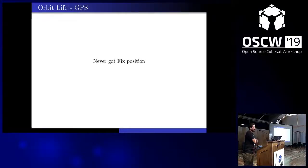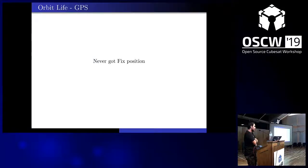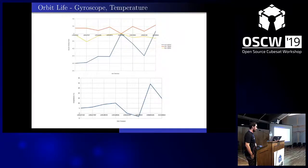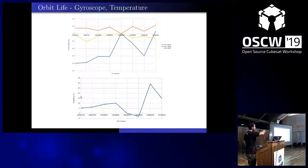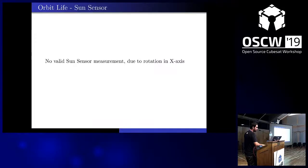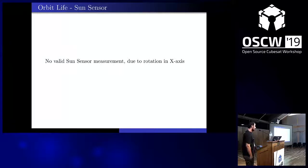The GPS in orbit never got a fixed position, and that is a problem because it never produced a TLE to run the determination algorithm of ADCS. Looking at gyroscopes and temperature: the blue line is the angular velocity of the X axis — in the X axis we have a continuous rotation of about 0.3 to 0.4 degrees per second. That is the reason we didn't have a valid sun sensor measurement, because of the continuous X-axis rotation.